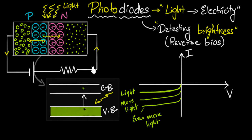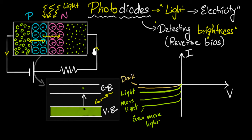One thing to remember: even in the absence of light, there is thermal energy that also causes electron-hole pairs to form. So even without purposely shining light, you get a very tiny amount of current. We call this the dark current — it's caused by background thermal radiation.